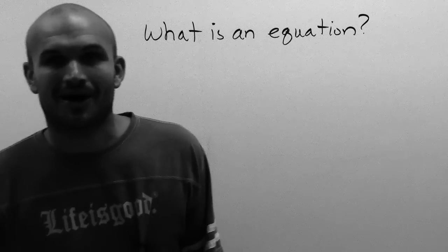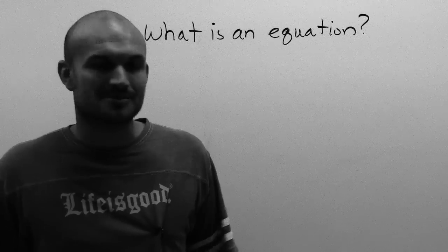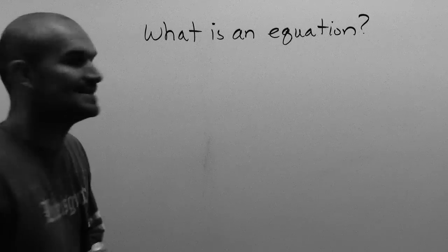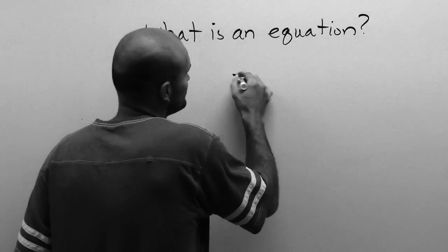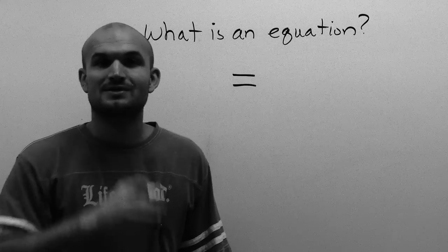An equation is just a mathematical sentence with an equal sign. So what exactly is that equal sign? Well, the equal sign looks like two little lines going horizontal.